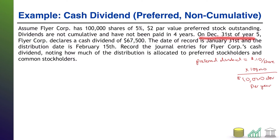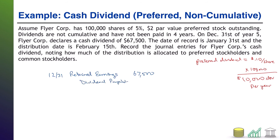On December 31st of year five, FlyerCore declares a cash dividend of $67,500. The day a company declares a dividend is the day they are officially obligated to pay it out. So on 12/31, you take the dividend out of retained earnings: Retained Earnings is debited for $67,500. Because this is a cash dividend the company is now obligated to pay out, it becomes a liability — Dividends Payable $67,500.